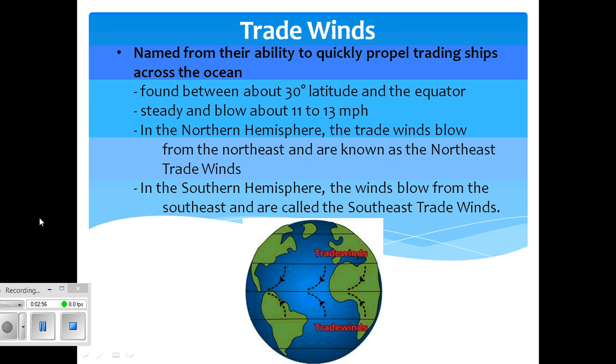Trade winds are named from their ability to quickly propel trading ships across the ocean. They are found between about 30 degrees latitude and the equator.